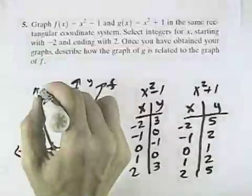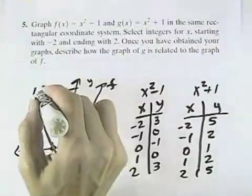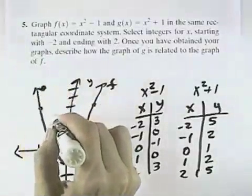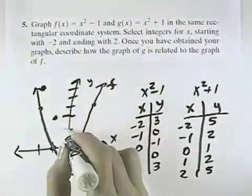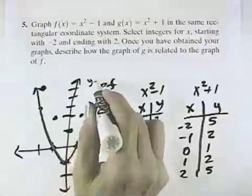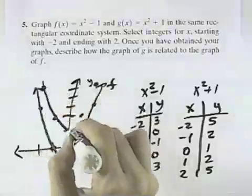So we have (-2, 5), (-1, 2), (0, 1), (1, 2), and (2, 5) for our graph of g.